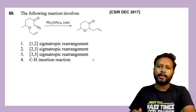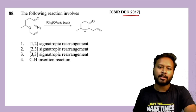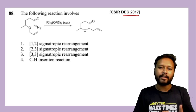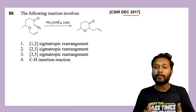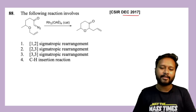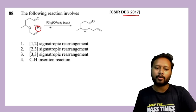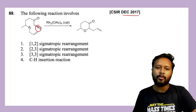This question from CSIR December 2017 was a 4-marker involving a sigmatropic reaction combined with a reagent. You are given a reactant and product, and you have to find out what kind of sigmatropic reaction is occurring, or whether there is a CH insertion happening. First, N₂ is not present in the product, and this oxygen bond is breaking — so a sigmatropic reaction might be happening with this particular bond.